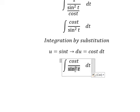Cosine t—this one will change to u, and we get u squared. Cosine t dt will change to du.